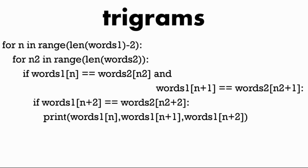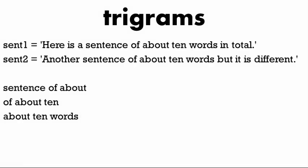Now the trigrams — instead of looking for one or two words, we're looking for three consecutive words, three in a row. We have an if statement and use 'and' to chain a second and third condition to check three words. In the first for loop, instead of going to the end, we go to the end minus two, and then print the trigrams. The results are: sentence of about, of about 10, about 10 words. That's correct.